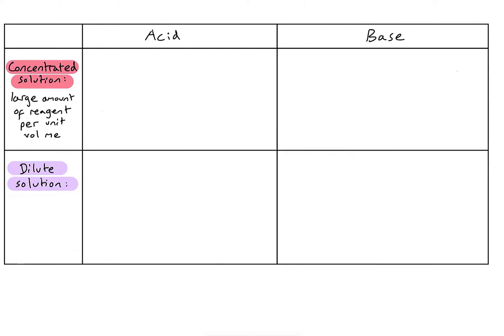Taking our strong acid HCl, a concentrated solution has lots and lots of material in it. Because it's a strong acid and there's lots of it, all of it has ionised, so there are lots and lots of ions present.